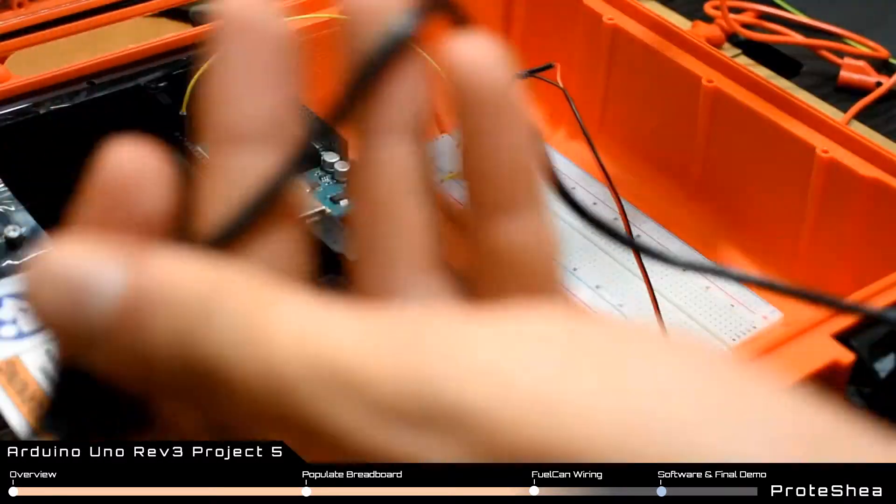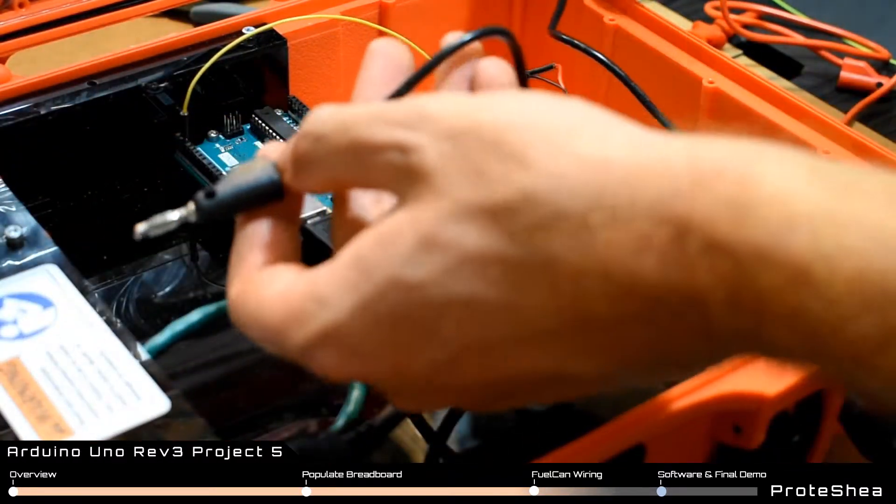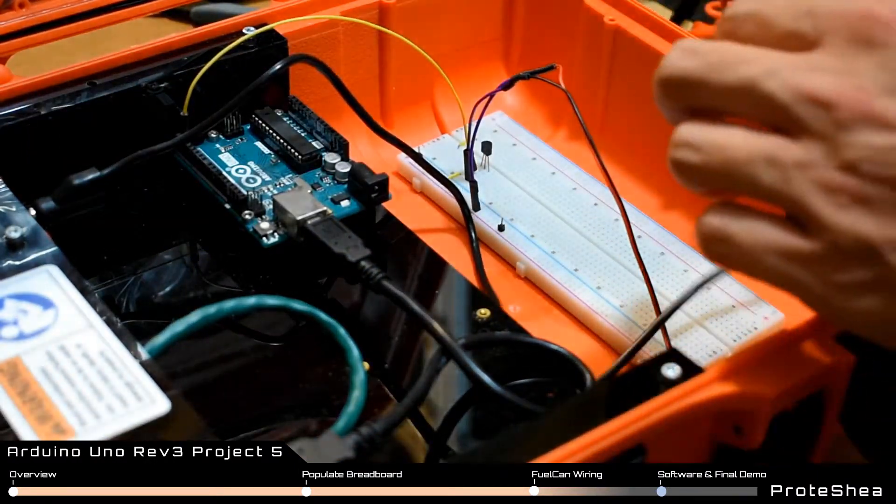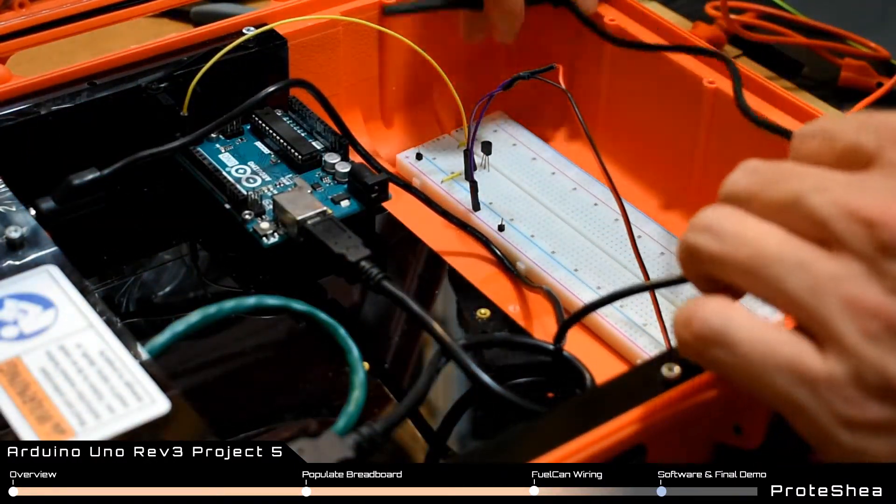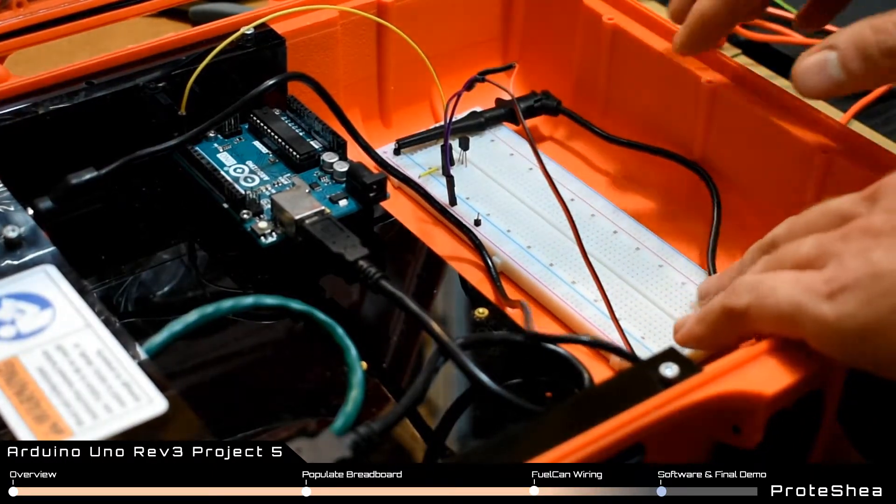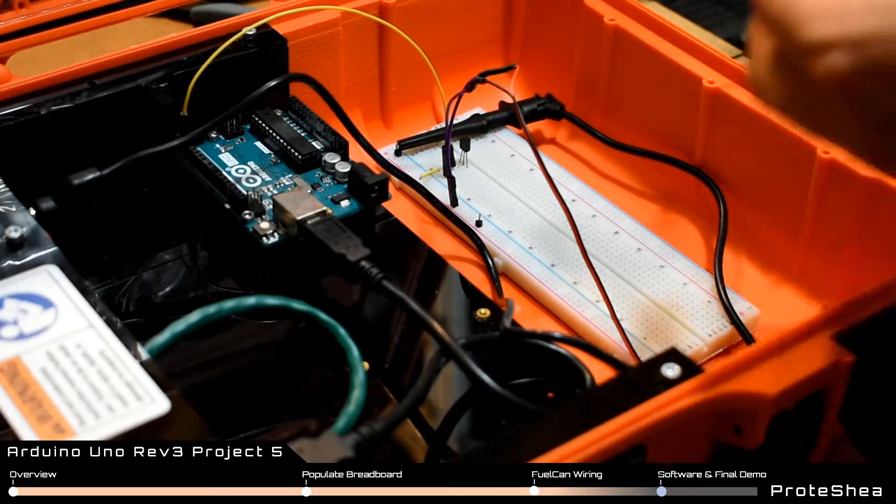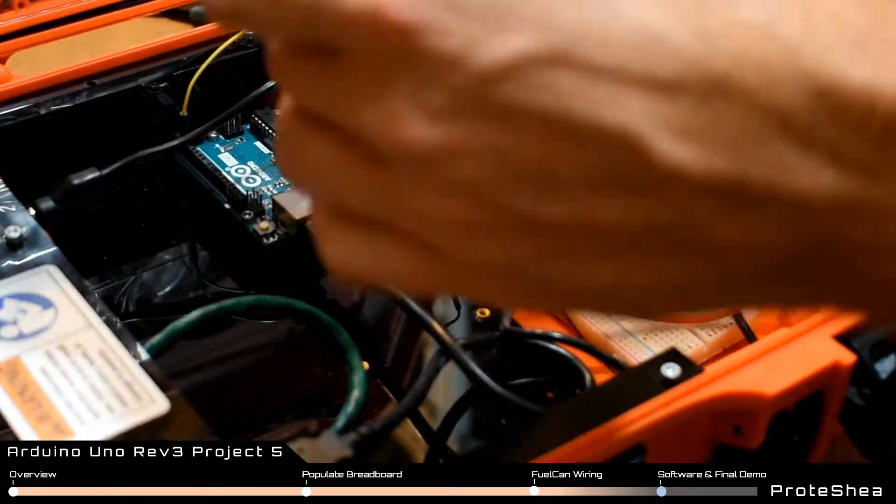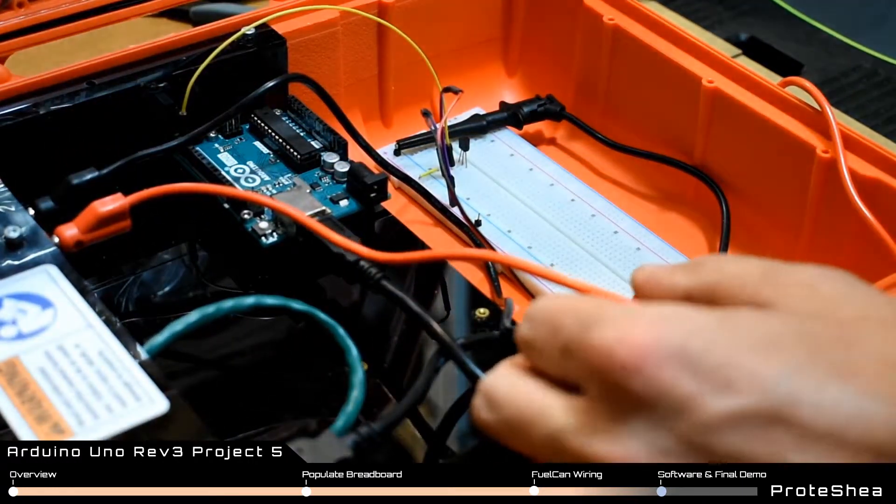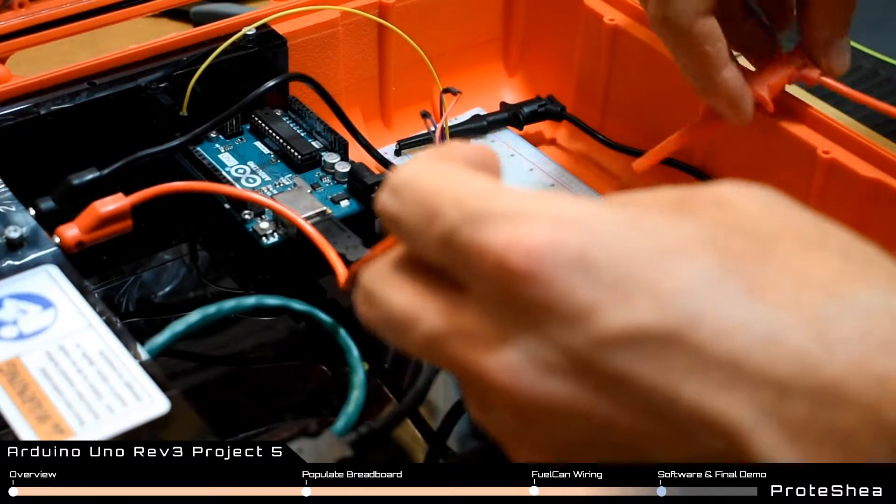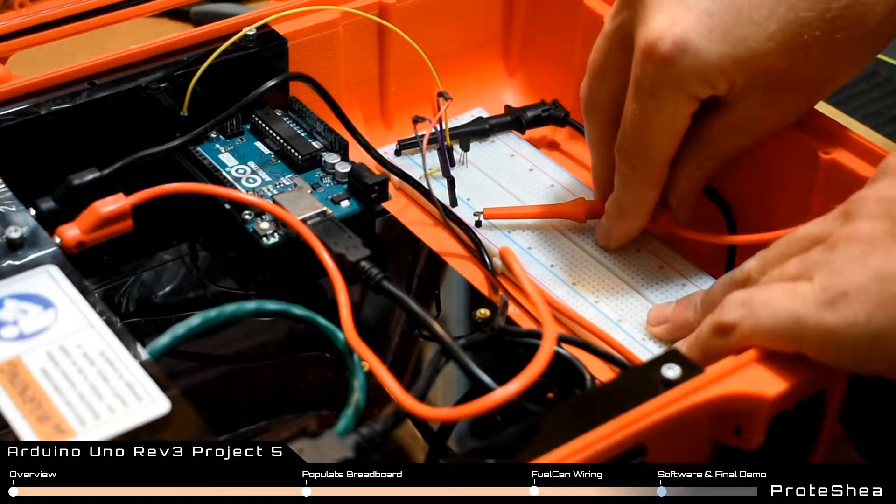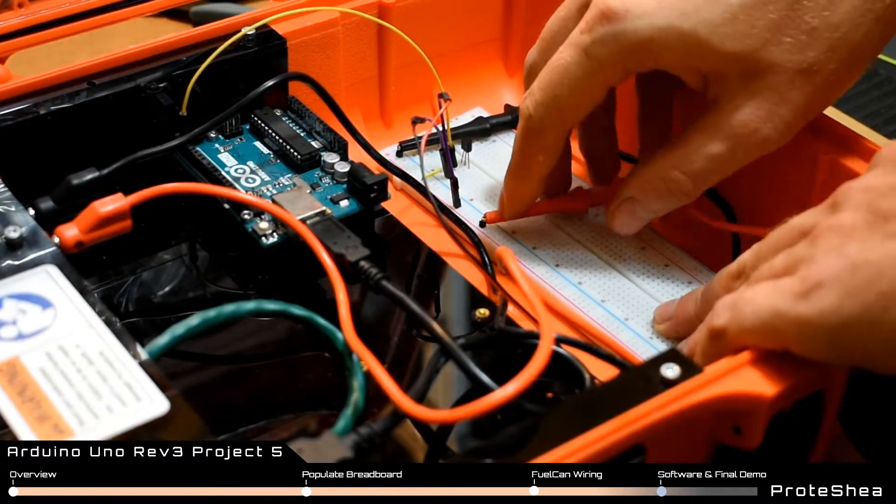Now we have to provide power to the breadboard with the banana jack to test lead cables. Plug the black one into the ground banana jack and connect that to a male header pin. Then use the red banana jack to test lead cable, plug that into the five-volt rail, and connect that to the male pin that's plugged into the positive rail on the breadboard.